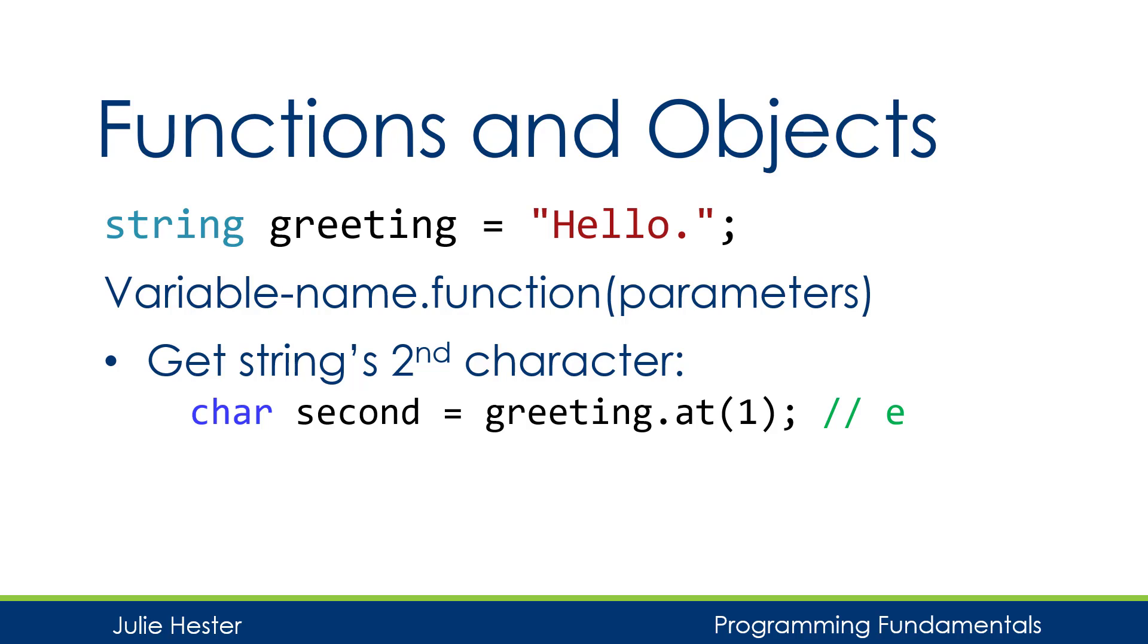Let's say I want to get the string's second character. The character itself is a char data type. I'm going to take the string greeting, put the dot operator after it, and the function to get a single character is called at. This function's parameter is the index number, so it's going to read as greeting dot at one. Looking at the string hello, one is going to be the second character, because index zero is the first character. If I execute the function greeting dot at one, I'm going to get the letter E returned.